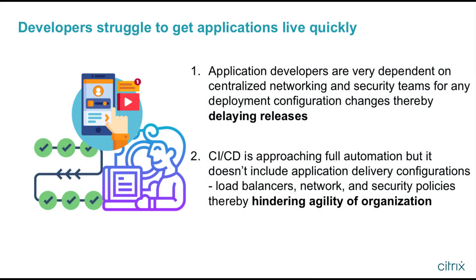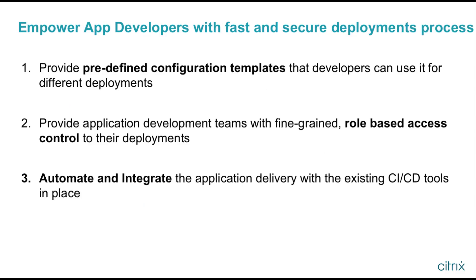Application development and innovation is happening at a rapid pace, but there is significant delay in taking applications live quickly. App developers are very much dependent on central networking teams and have to go through ticket-driven processes to make any app delivery configuration changes. To overcome these challenges, organizations need to empower app developers with predefined configuration templates, rule-based access control, and CI-CD integration.